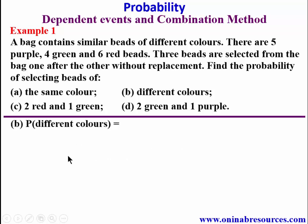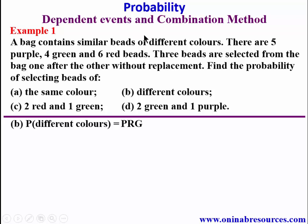For part b, we are looking for beads of different colors. Since there are three colors and three beads are selected, it is one purple, one red, and one green. In the analytical method or tree diagram we would rearrange these, but with the combination method that is not required.